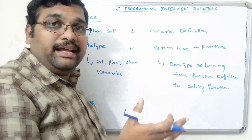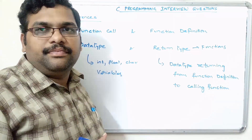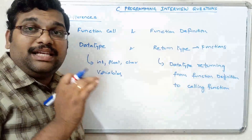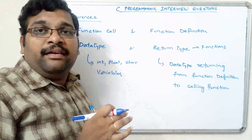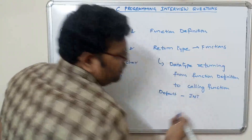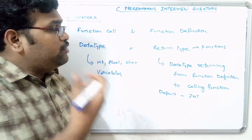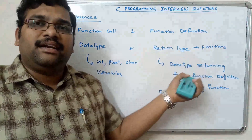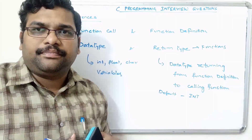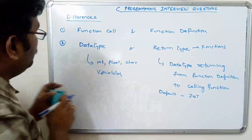Data type is used for variables; return type is used for functions. We have to use this return type in all three categories: function declaration, function call, and function definition. The default return type — if the user does not mention any return type — is integer. So if the function returns an integer value, the user need not specify the return type in the function definition or function declaration.